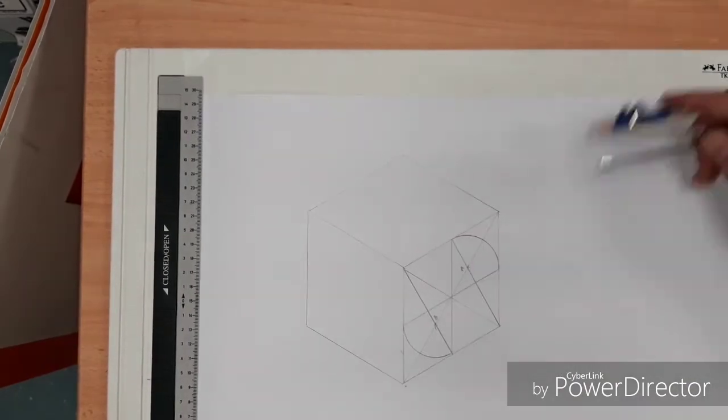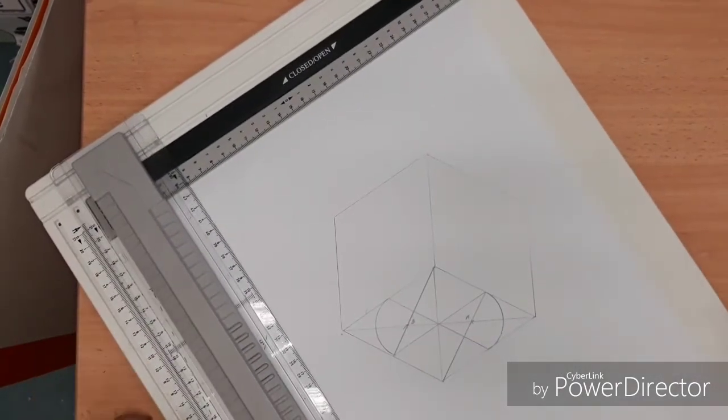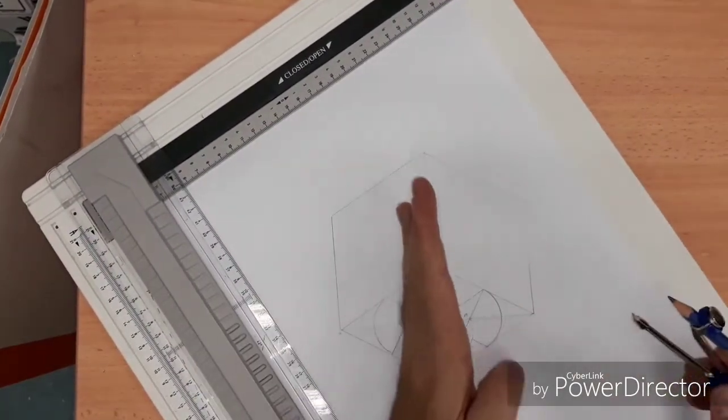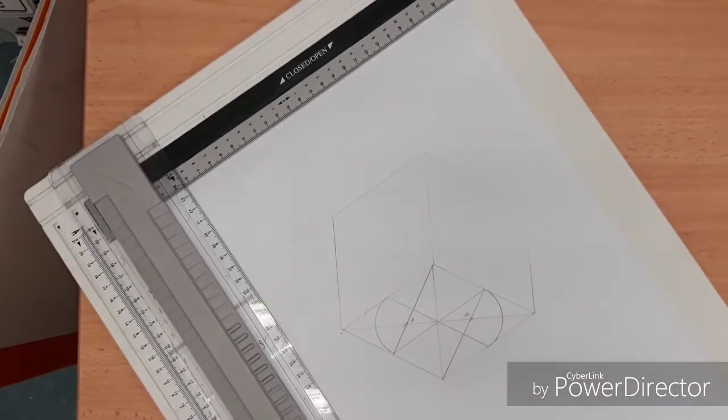We do exactly the same at the opposite end. So what you have here is two arcs. Again, looking at it in this position, we can see there's a line of symmetry down the middle and we have these two arcs.